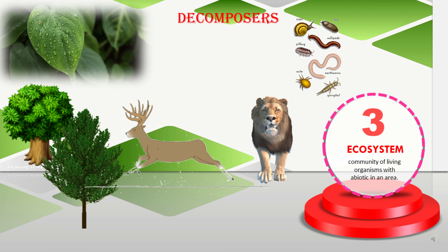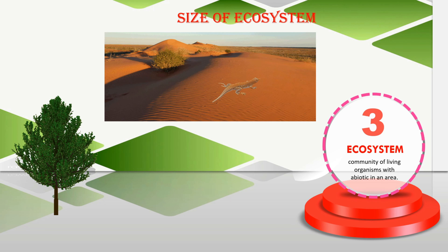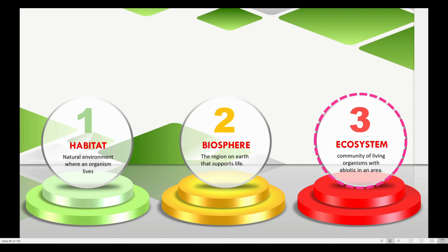When all of them live in a particular area with similar abiotic conditions, we call it an ecosystem. Ecosystem has no particular size — it can be as large as a desert or as small as a tree. Ecosystems also require abiotic factors such as water, temperature, and soil to thrive.